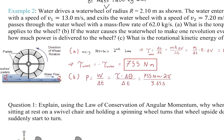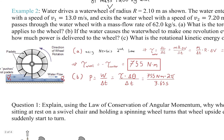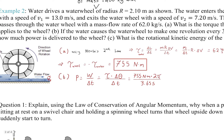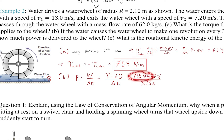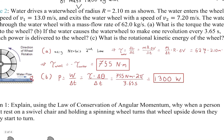Part B: if the water wheel makes one revolution every 3.65 seconds, the power delivered is work over time, where work = torque × angular displacement = tau × 2pi radians. Dividing by 3.65 seconds gives a power output of 1300 watts. Part C: the rotational kinetic energy is ½I*omega², treating the wheel as a cylinder (I = ½MR²). With omega = 2pi/T, the rotational kinetic energy is approximately 3,920 joules.